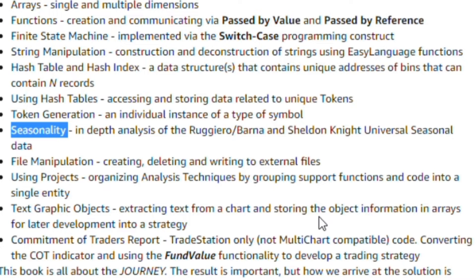We do file manipulation and create files, constructing output strings using a carriage return or line feed to make it very readable to a user. I introduced the concept of the project again — how you can organize analysis techniques and use the project in the Easy Language editor. We go into detail about the text graphic object. I don't discuss other graphic objects in this book, but it gives a little idea of how to work with the graphics interface of Easy Language.